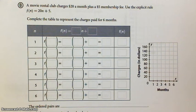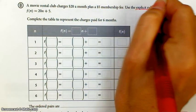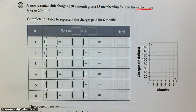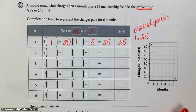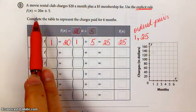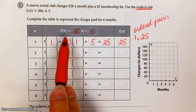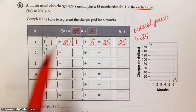Okay, next example, a movie rental club charges $20 a month plus a $5 membership fee. Use the explicit rule f(n) is equal to 20n plus 5. So complete the table to represent the charges paid for six months. Okay, so you're going to use the values from the explicit rule to fill in the table. f(n) is equal to 20n plus 5.